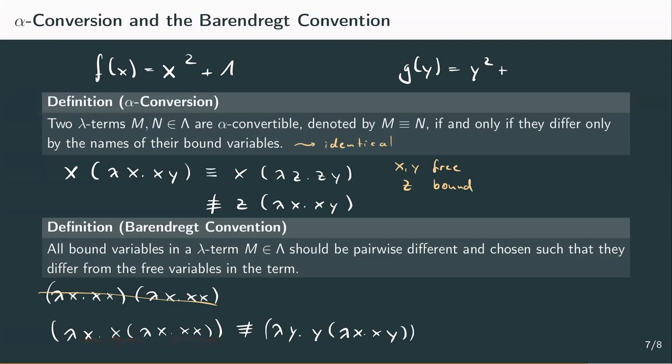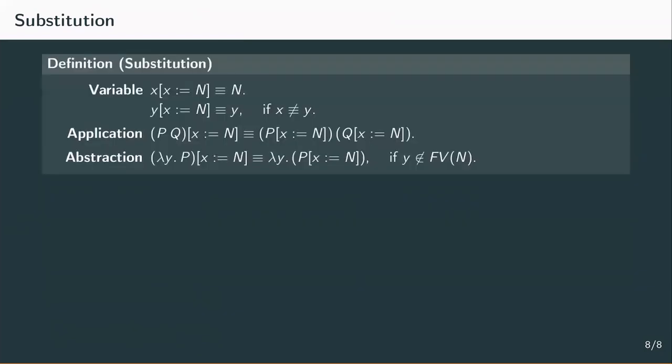So now we know how to distinguish free from bound variables. To be able to compute something like lambda x dot x squared plus 1 applied to 5, we need to be able to insert the input. So how do we substitute every occurrence of the variable x by the input 5? We denote this notion by x squared plus 1 and then square brackets and inside x is defined as 5. Once again, we have a recursive definition for all the cases of lambda terms that we could have. The simplest case speaks about substituting into a term which just contains a variable. If it's the same variable that should be substituted, we can just substitute and get the input. So, substituting x by n in the term x would yield n. If the variable is a different one, for example y, and we want to substitute x by n, then there is no x. So there's nothing to substitute and we would just get y again.